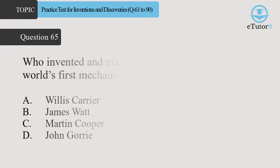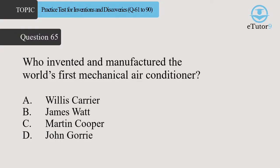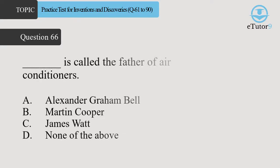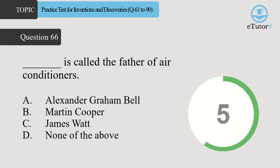Question 65. Who invented and manufactured the world's first mechanical air conditioner? Answer is A. Willis Carrier. Question 66. Dash is called the father of air conditioners. Answer is D. Martin Cooper.